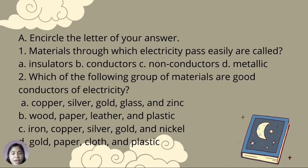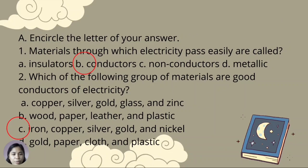Encircle the letter of your answer. Number 1: materials through which electricity passes easily are called — A. Insulators, B. Conductors, C. Non-conductors, D. Metallic. Number 2: which of the following groups of materials are good conductors of electricity? A. Copper, silver, gold, glass, and zinc. B. Wood, paper, leather, and plastic. C. Iron, copper, silver, gold, and nickel. D. Gold, paper, cloth, and plastic. Correct answers: number 1 — B, Conductors; number 2 — C, Iron, copper, silver, gold, and nickel.